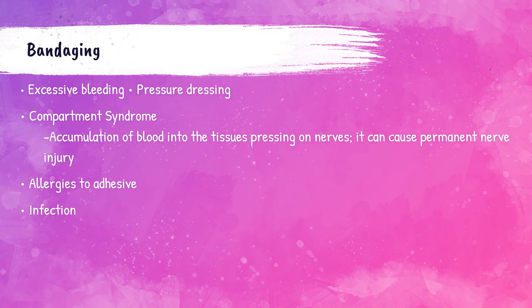The phlebotomist must always check the identification band or bracelet and ask the patient their name and date of birth. The information from the patient must match the requisition form. Portable label printers can print the correct labels. Remember that improper identification can cause the death of a patient, so as phlebotomists, we absolutely need to make sure that we are properly identifying the patient.